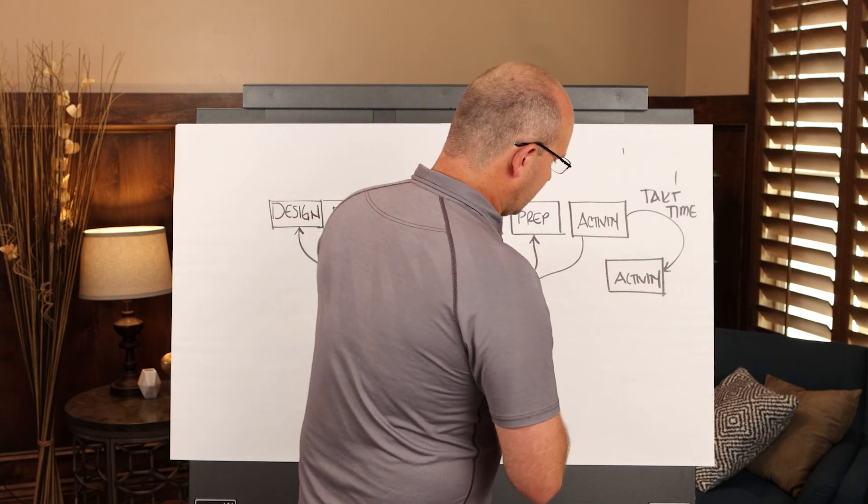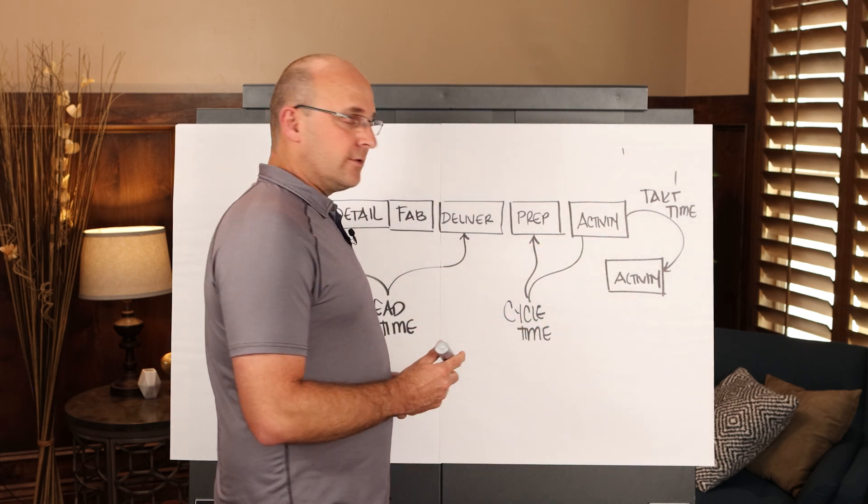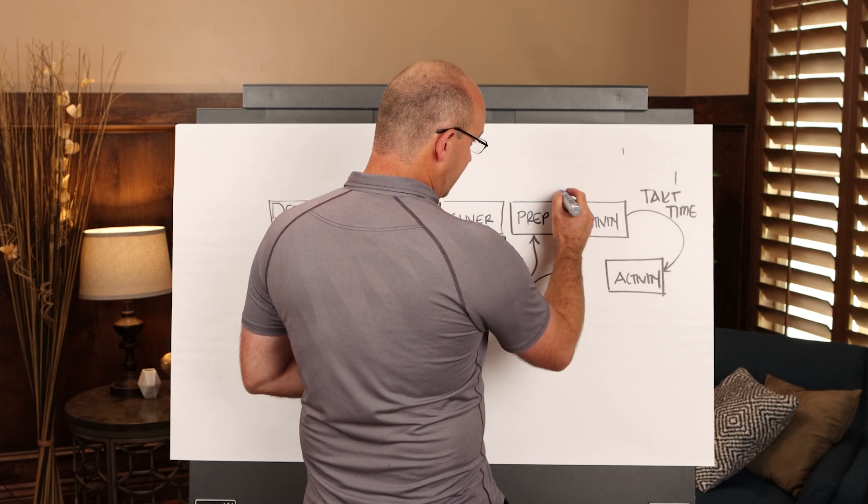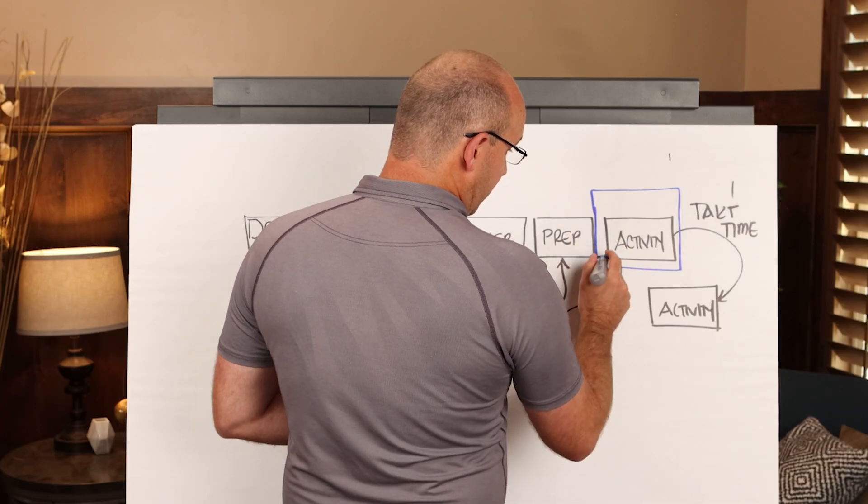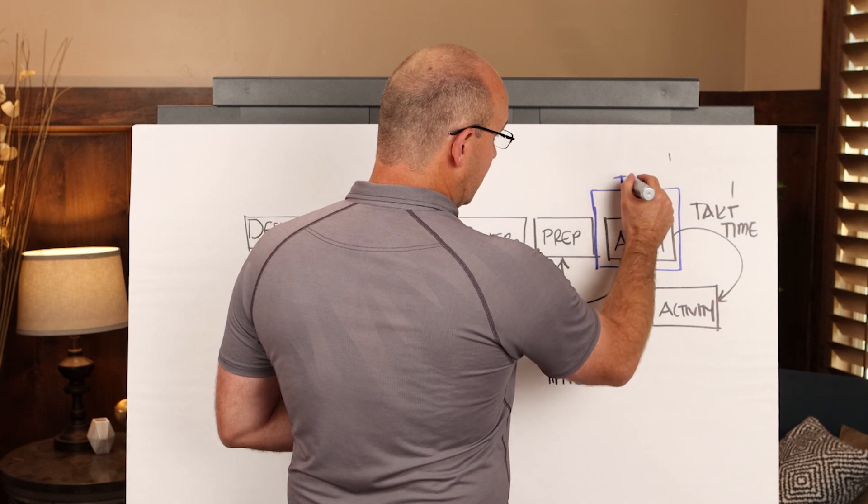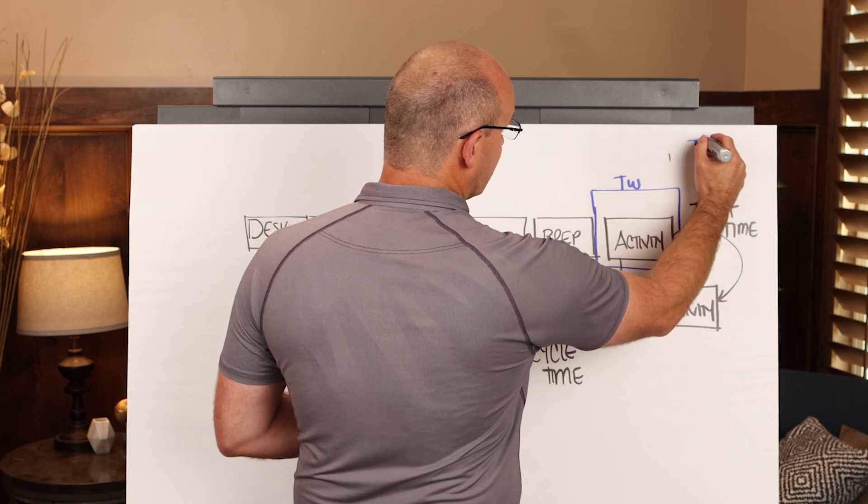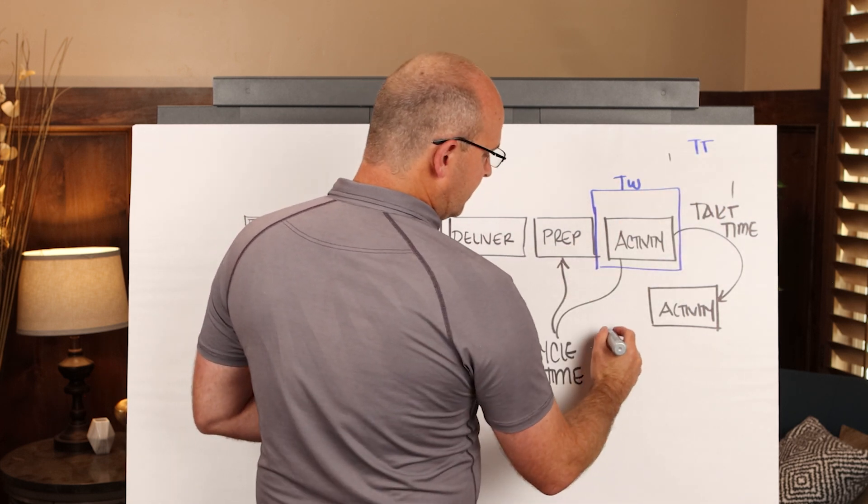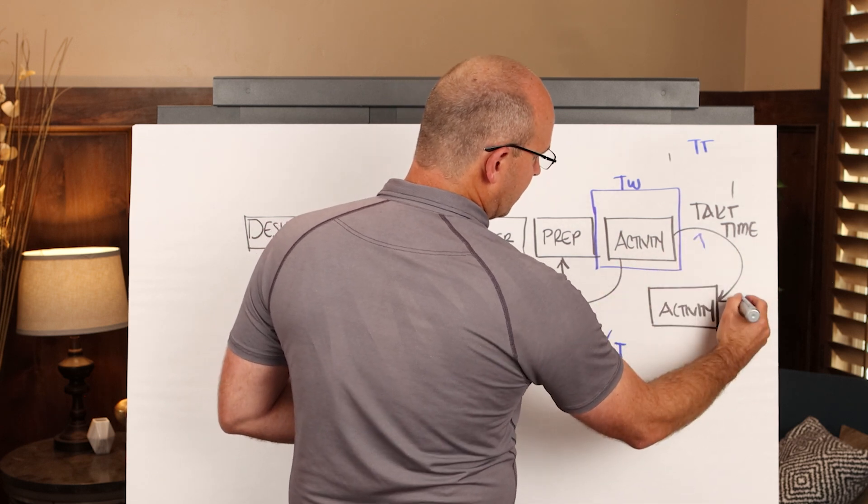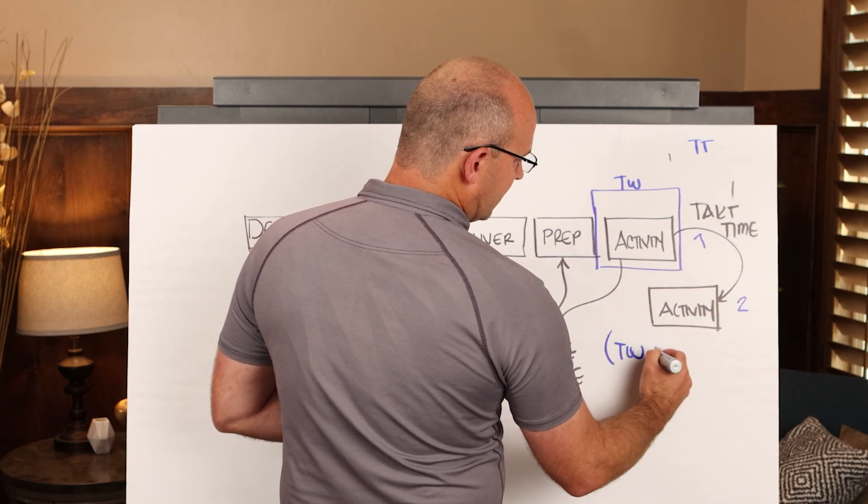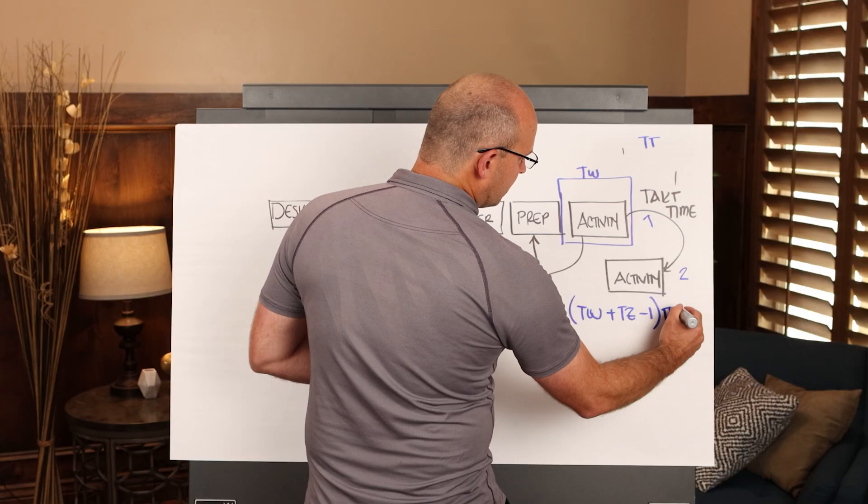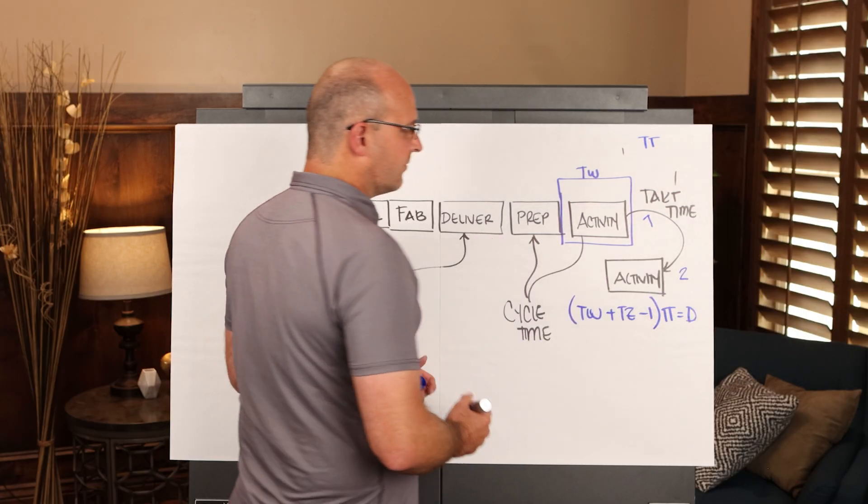So first of all, the tack time. I've explained in other videos, and I'll do it again, that if you consider the activity here or the work package within a tacked wagon, and this is called a tacked wagon, and you have your tack time, you can use the formula, and these are zones, so this would be zone one and two, tacked wagons plus tacked zones minus one multiplied by the tack time equals the overall duration.